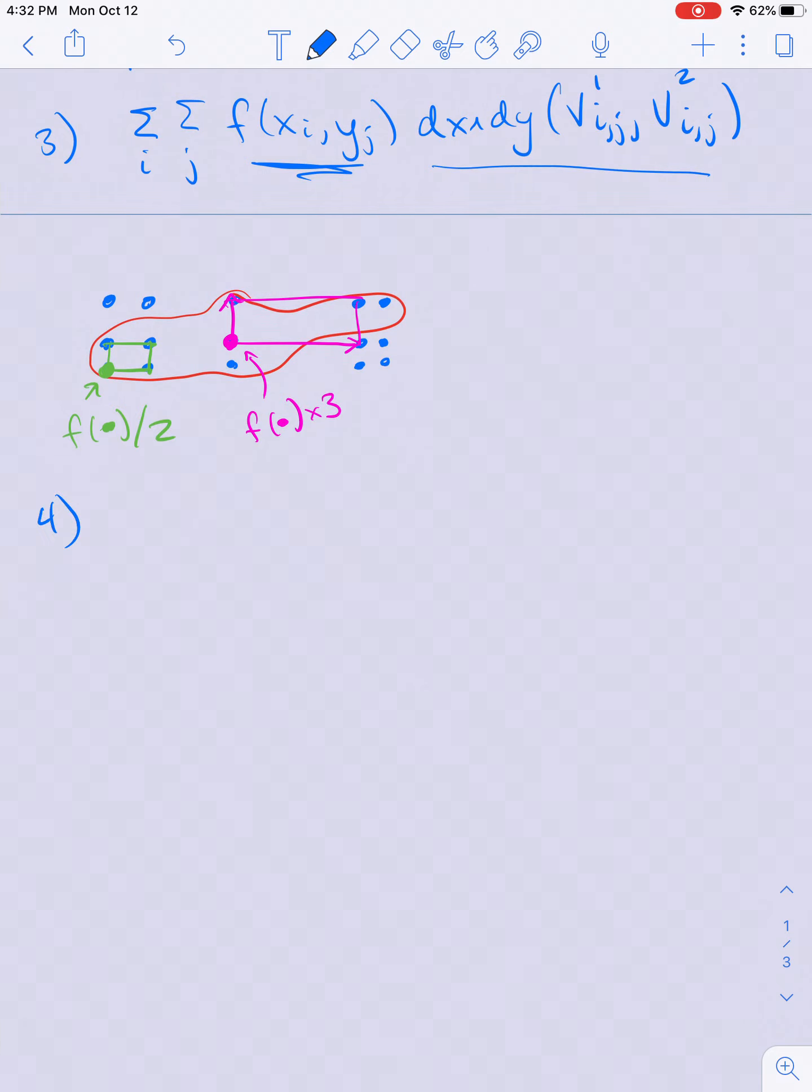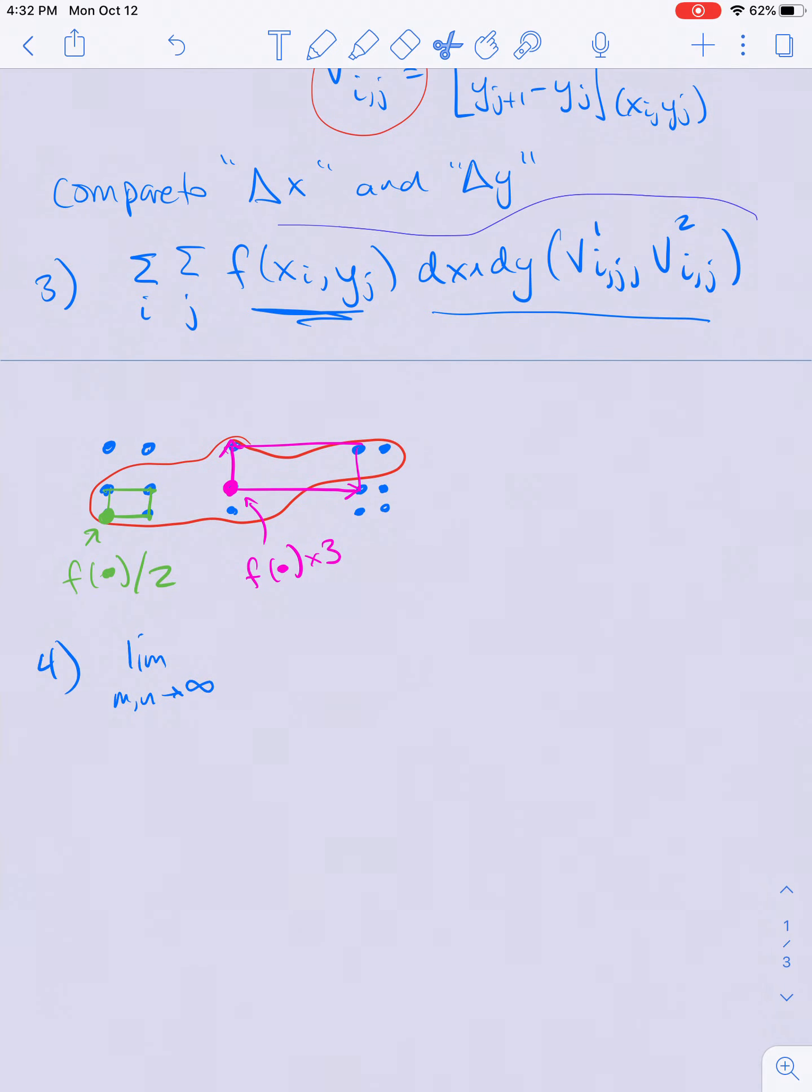Depending on how I've chosen my lattice I'll get different sums, but the point is that the theorem is that if I take the limit as m and n go to infinity—this is something you'll learn in an analysis class—this limit is how we define the integral of the function f over this region.